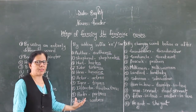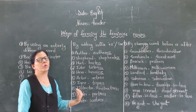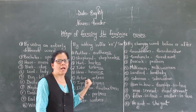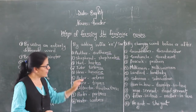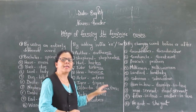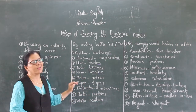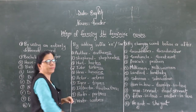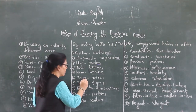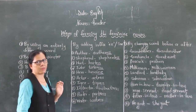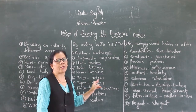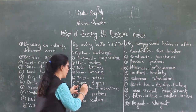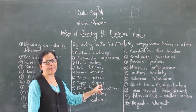Now some other examples — here what we have to do is drop the last vowel before adding -ess. In these words also we need to add -ess, but we drop the last vowel first. Let us have a look at the examples. Actor — see here, we drop the 'o' and add -ess: actress. Next, tiger — we drop the 'e' and add -ess: tigress.